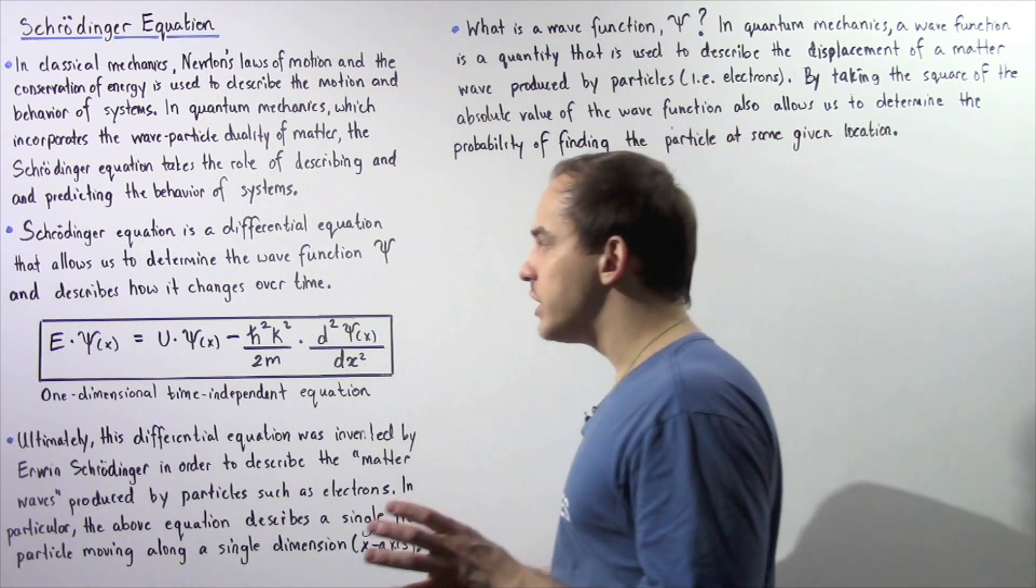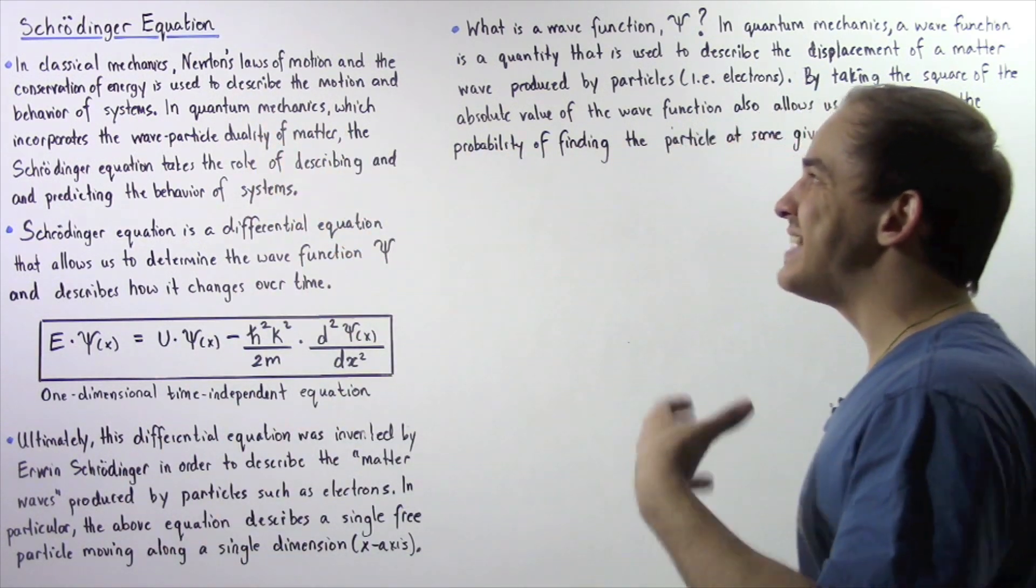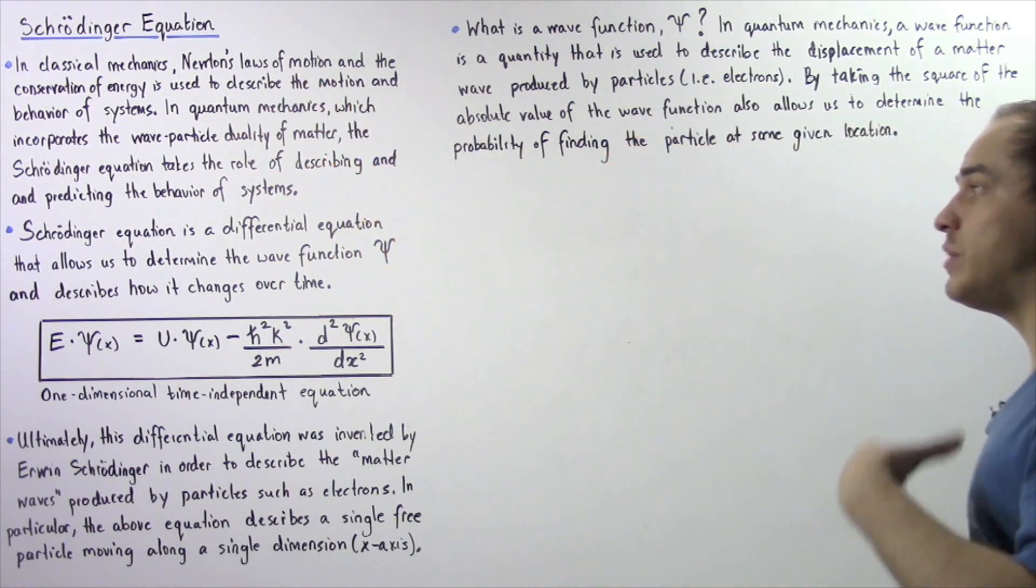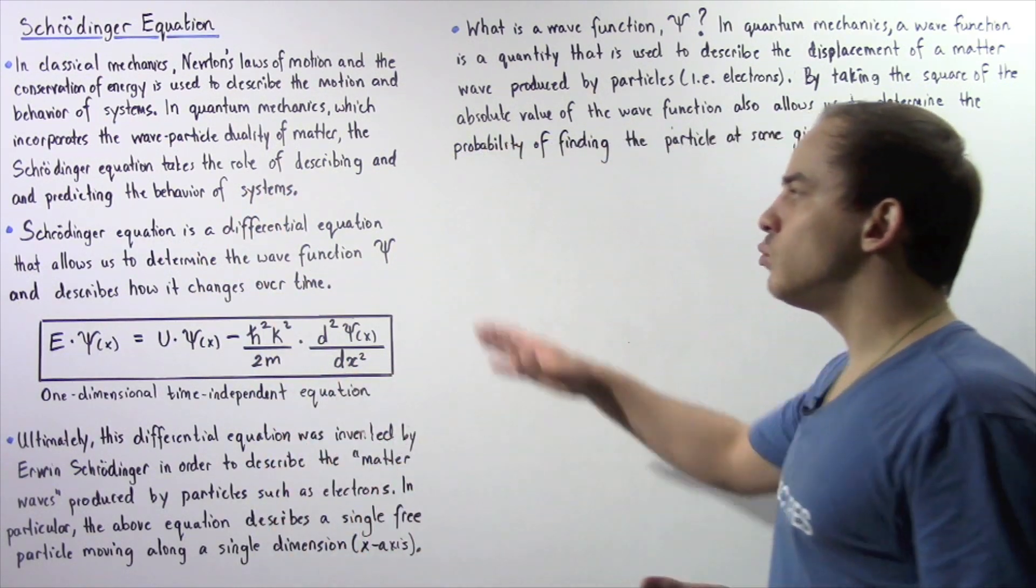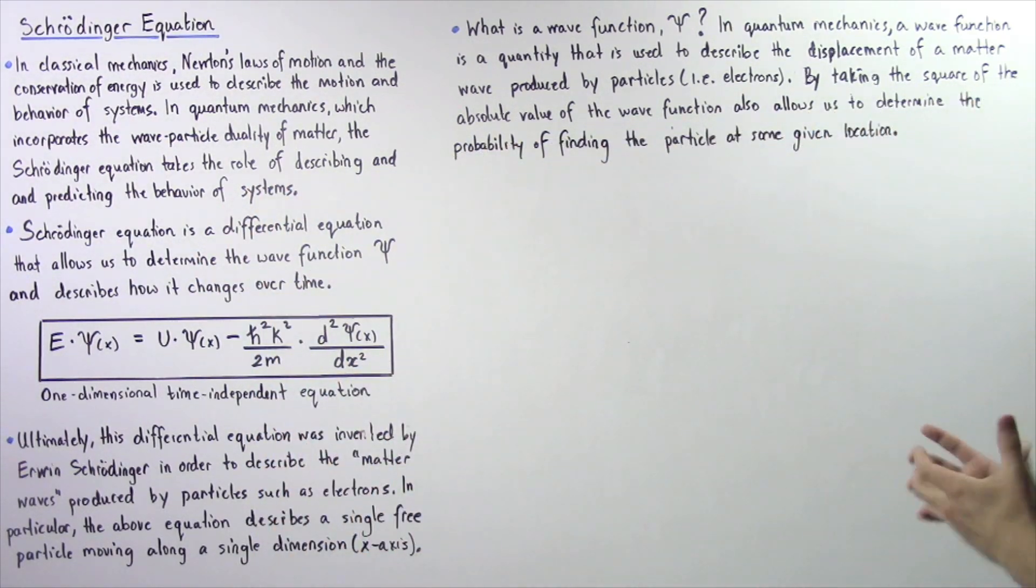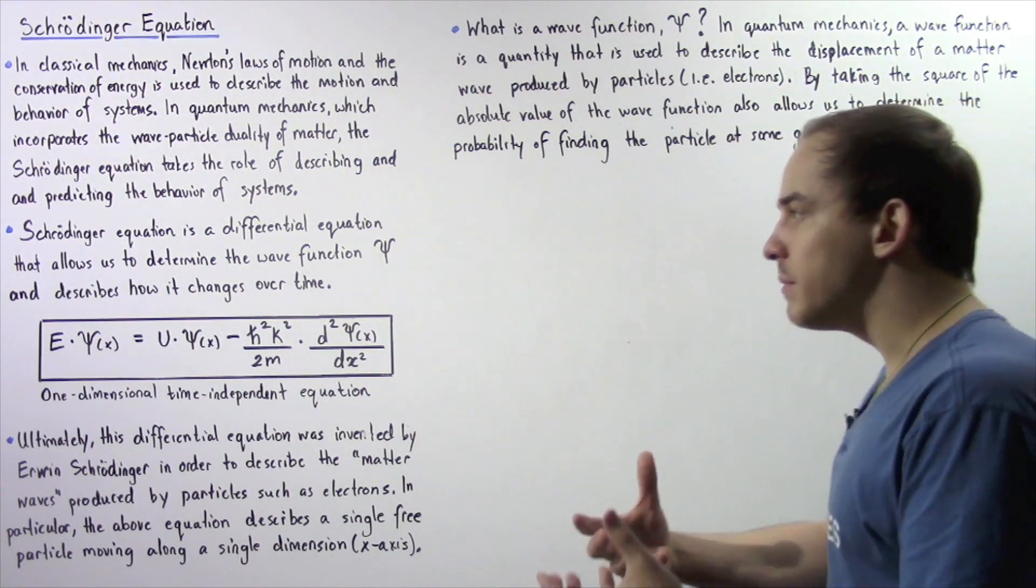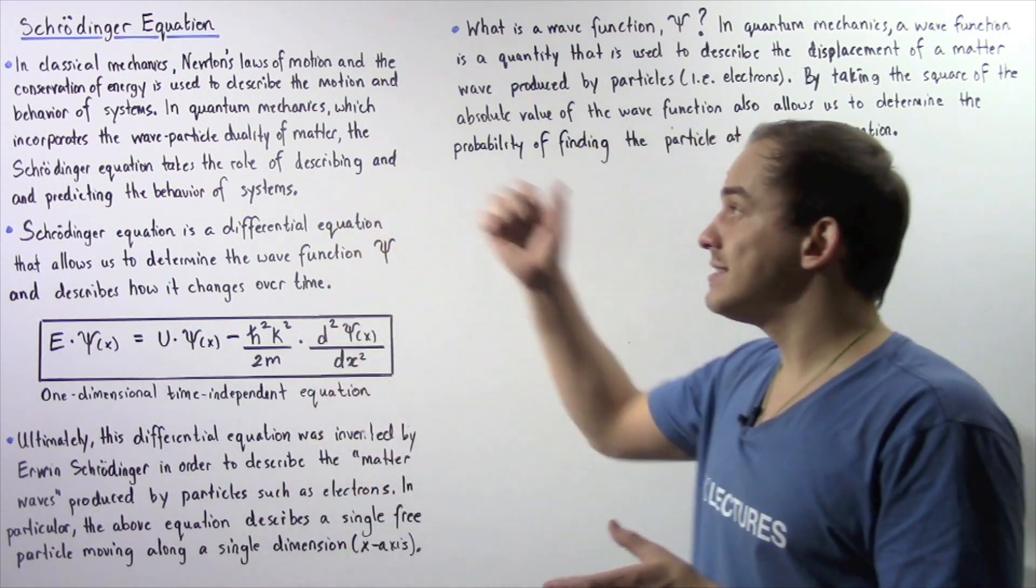So we can basically conclude that in quantum mechanics, Schrödinger's equation takes or replaces Newton's laws of motion. And we use Schrödinger's equation to basically determine what the wave function is. And then we basically use that wave function to determine the behavior of our subatomic system.